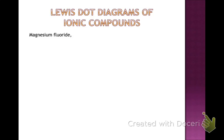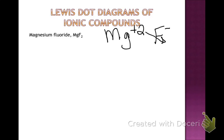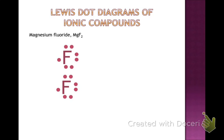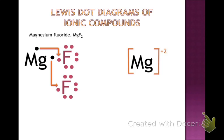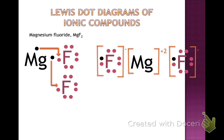Now magnesium fluoride — write down the formula. We should have MgF₂. Magnesium is in group 2 with a plus 2 charge; fluorine is in group 17 with a minus 1 charge. We crisscross the numbers to get Mg and F₂. Drawing two fluorines: magnesium has 2 valence electrons but fluorine only has one spot available, so magnesium donates one electron to one fluorine and another electron to another fluorine. Magnesium has a plus 2 charge; each fluorine gains one electron and becomes a minus 1 charge, giving us one magnesium and two fluorines.